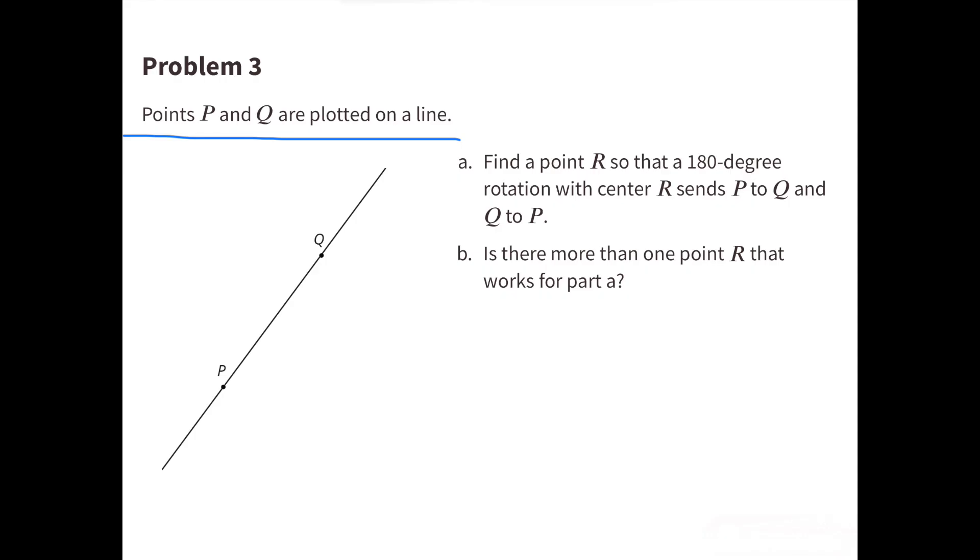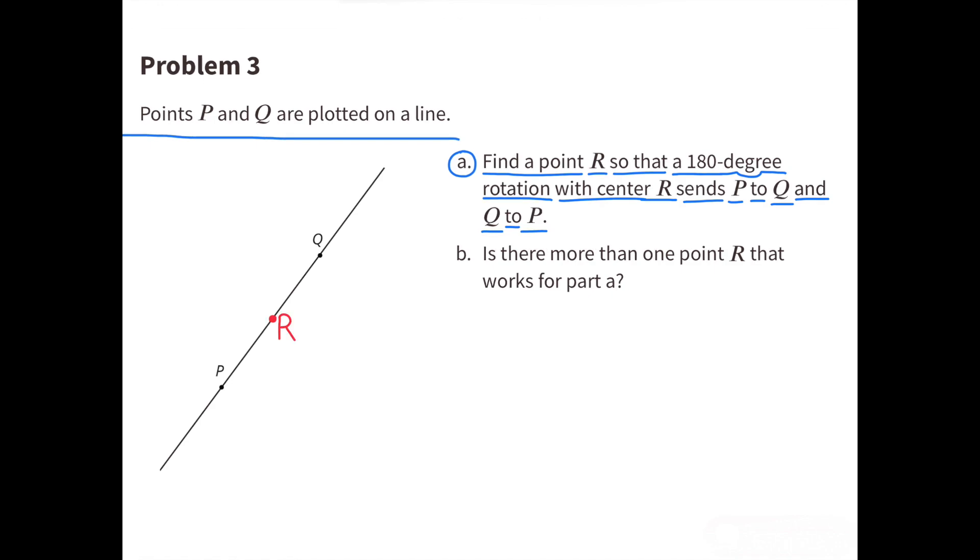Number 3. Points P and Q are plotted on a line. A. Find a point R so that a 180 degree rotation with center R sends P to Q and Q to P.